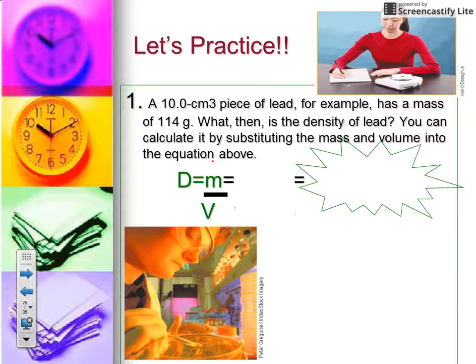The density triangle allows us to solve for any of the variables. So let's look at this example. You have a 10 centimeter cube piece of lead and it has a mass of 114 grams and wants to know what's the density. So I've already got the formula here, we just plug in. So you're going to plug in for the mass, 114 grams, divided by the volume, 10.0 centimeters cubed.